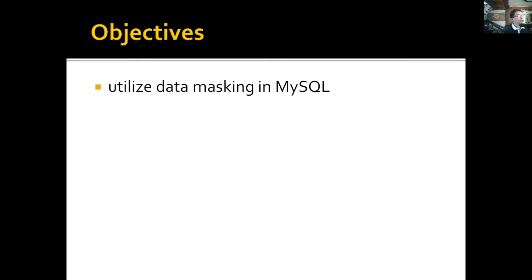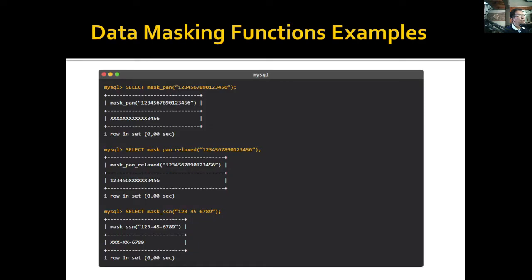What I'll be doing here is show you examples of these functions while I explain the functions themselves. Here we have the mask_pan function, and you'll notice that it will mask some of the values and only reveal the last four values, replacing all with X.